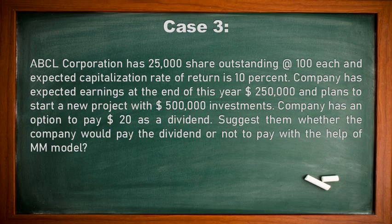Case three: ABCL Corporation has 25,000 shares outstanding at $100 each, with an expected capitalization rate of return of 10% and cost of capital of 10%. The company has expected earnings at the end of this year of $250,000 and plans to start a new project with $500,000 investment. The company has an option to pay $20 as a dividend. Suggest whether the company should pay the dividend or not, using the MM approach.